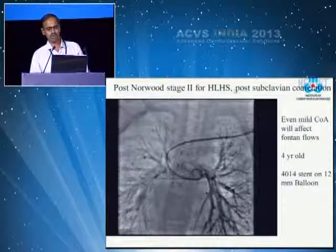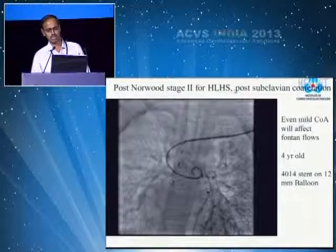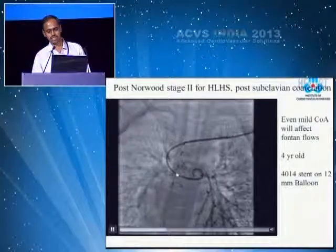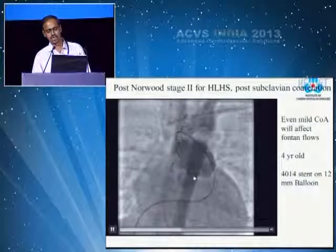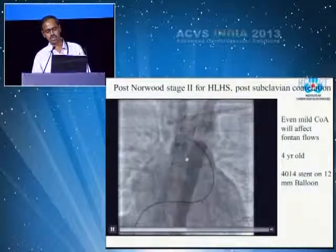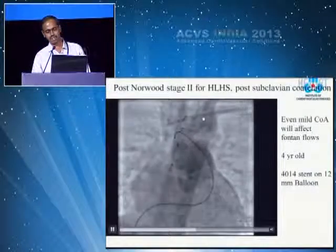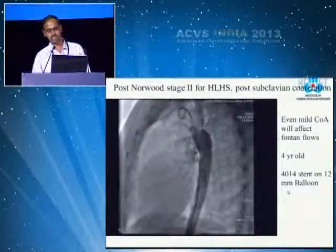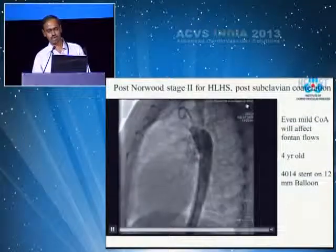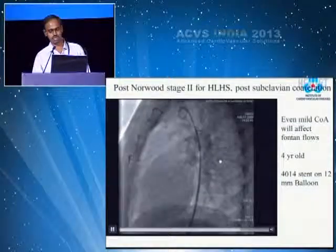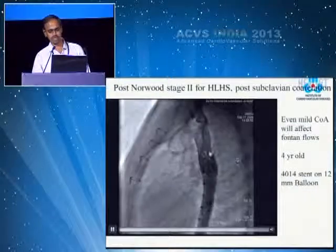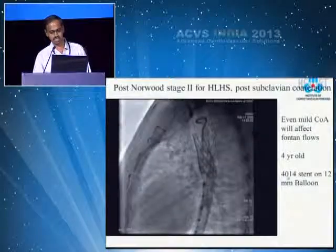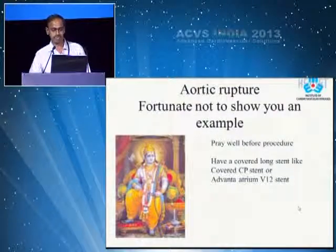This is an example of a post-Norwood stage 2 for hypoplastic left heart syndrome. This is the Glenn circuit, and this is the neo-aorta where there is a discrete coarctation, which is stented in a small child of around 4 years with a 4014 stent on a 12-mm balloon. Again, this stent can be post-dilated later.